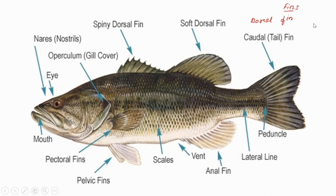The next type of fin is the caudal fin. Caudal means it is in the tail region. The caudal fin here can be seen as bifurcated. Its shape varies from one species to another — in some it is circular, and in some the length of the two lobes may be unequal. Based on all this we identify each fish species.